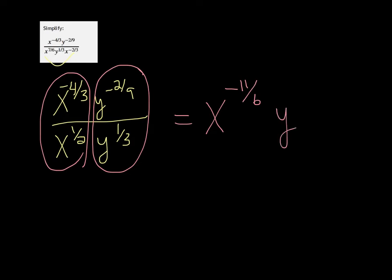And negative two-ninths minus one-third. That's y to the negative five-ninths.